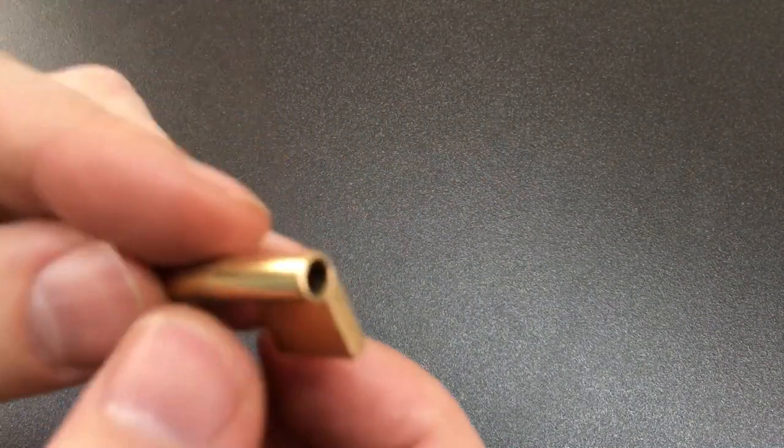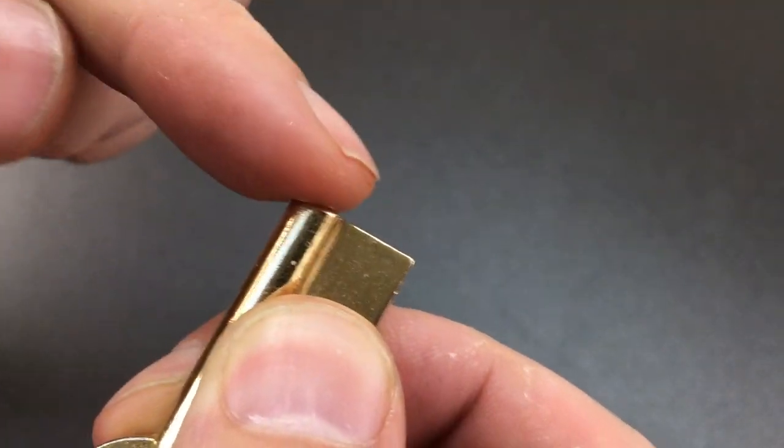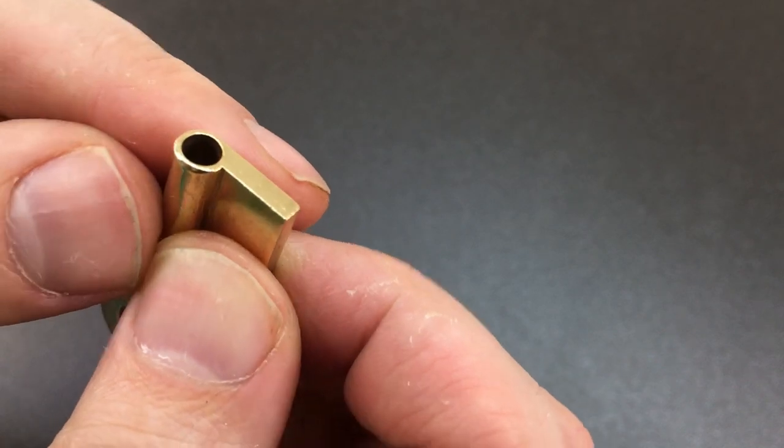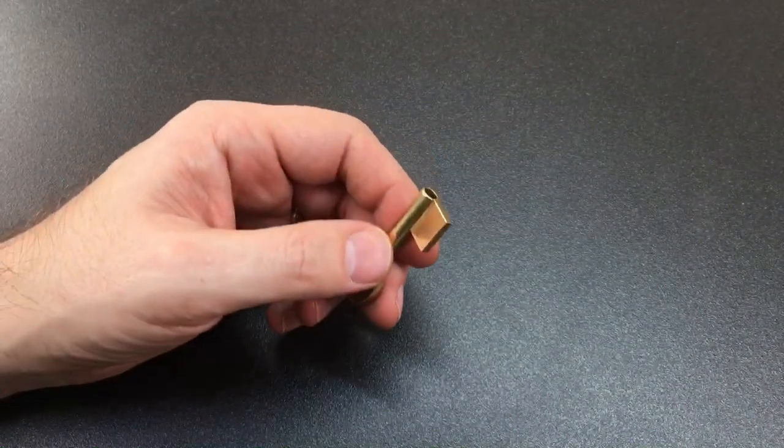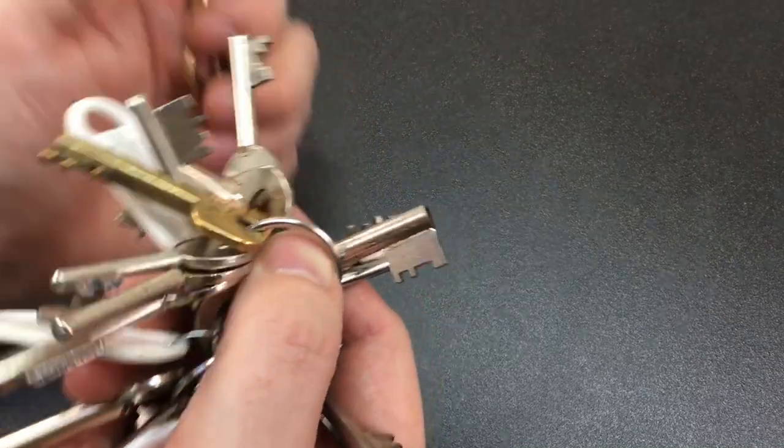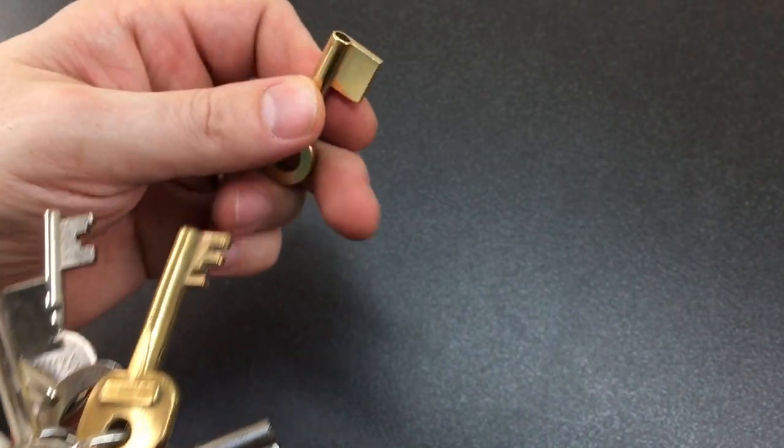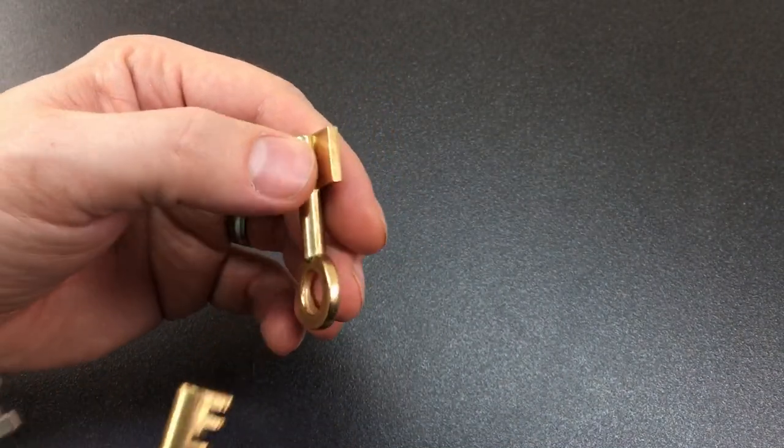If I thread that, I reckon they'll mesh together quite nicely. The tip of the key itself is a little bit rounded, so I'm going to have to get a file and file straight across. In terms of bitting, I can go mad, can't I? There's no point in anything too complicated.